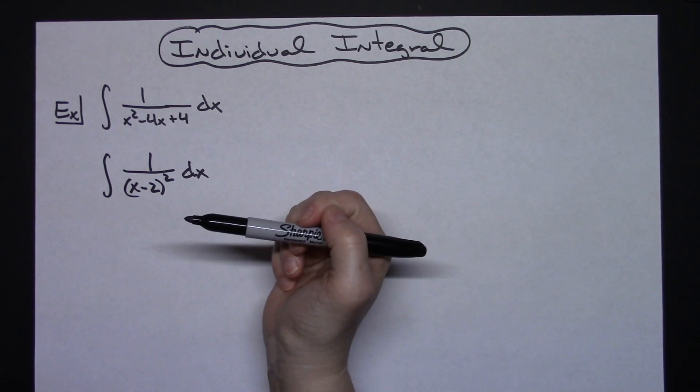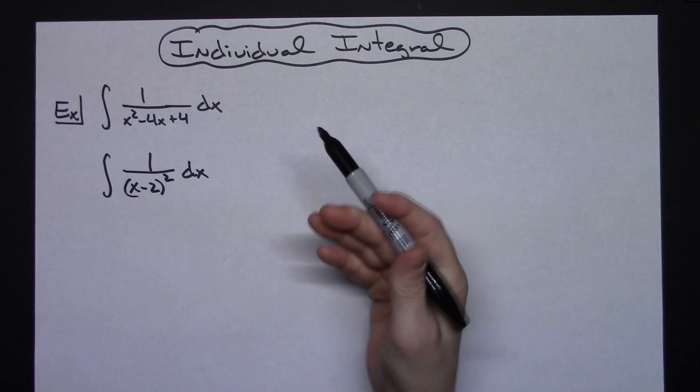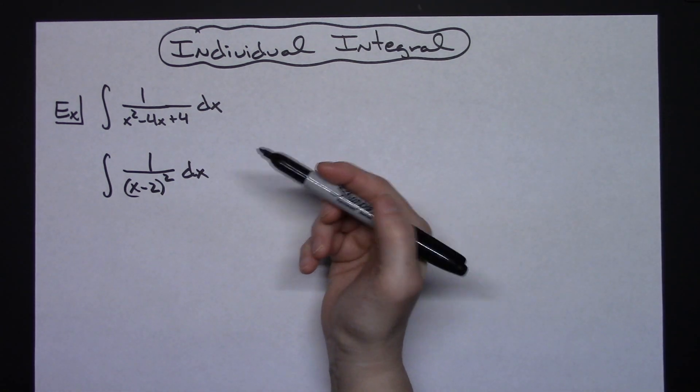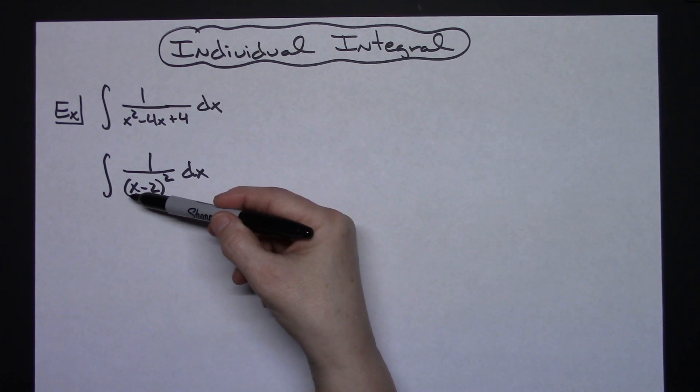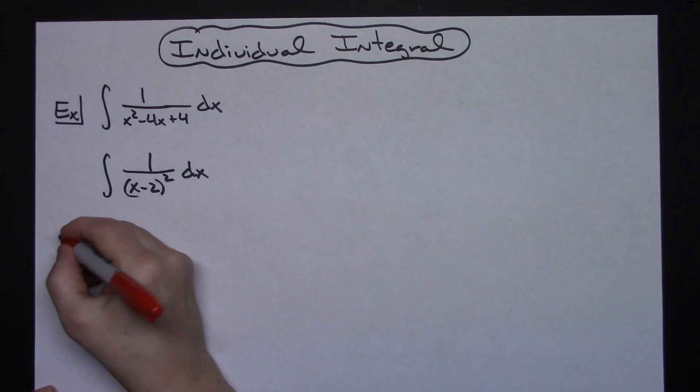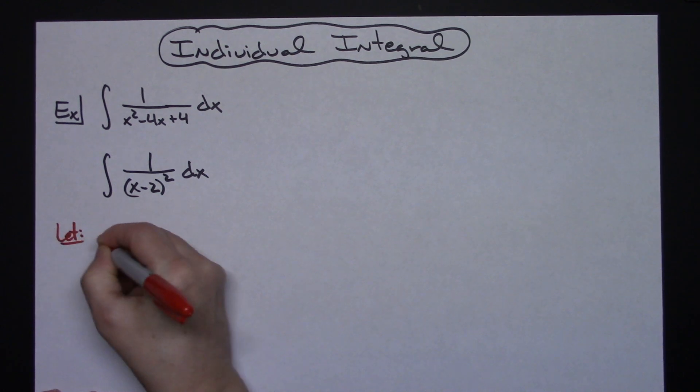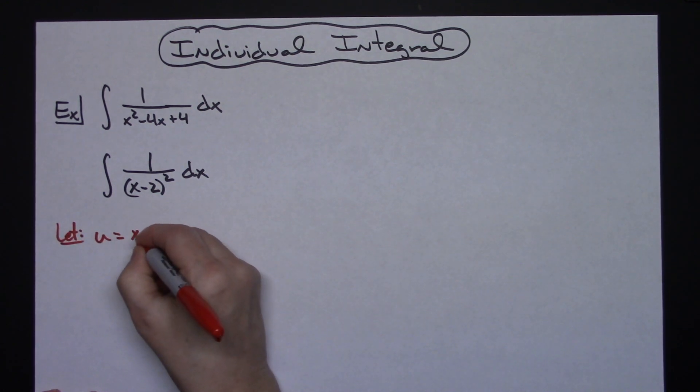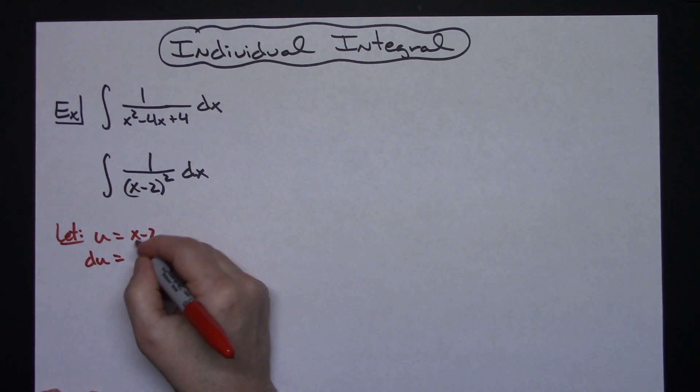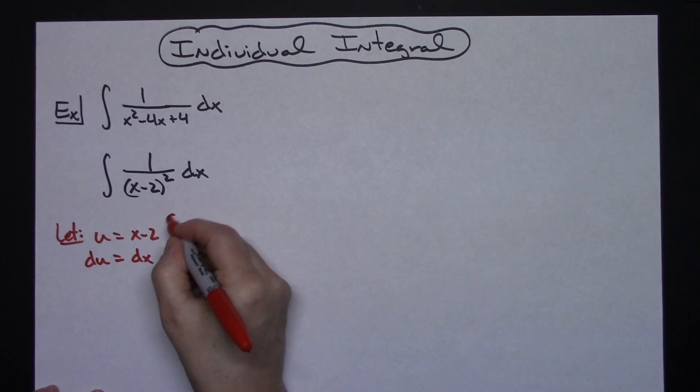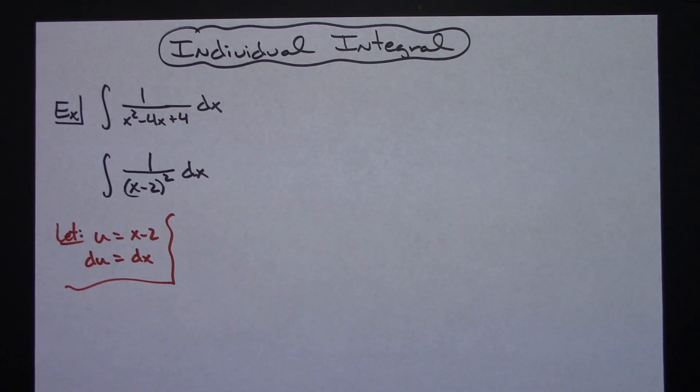Now I can let u be x minus 2. Taking the derivative of both sides, I have du equals dx. So I'll come back to my altered integral here...